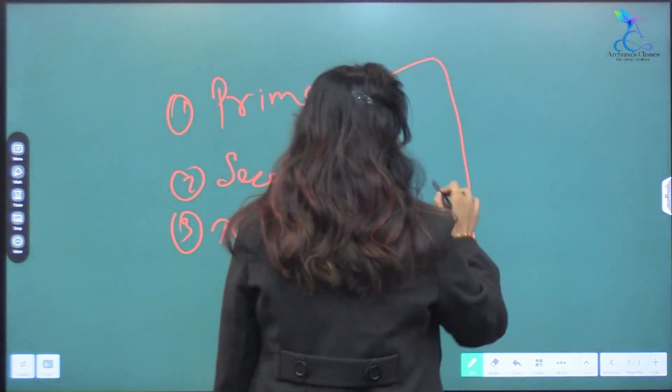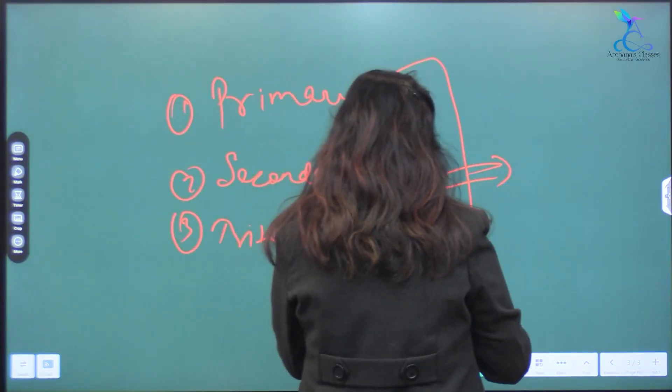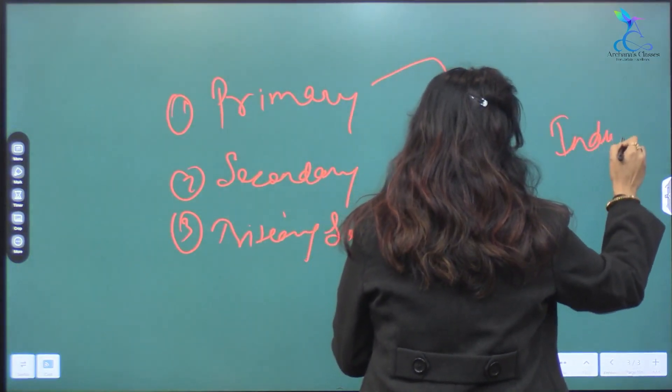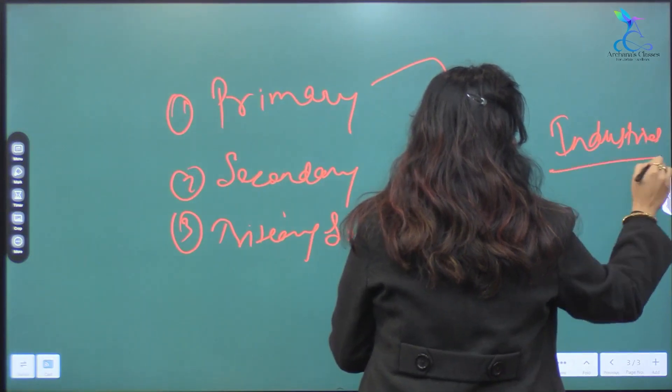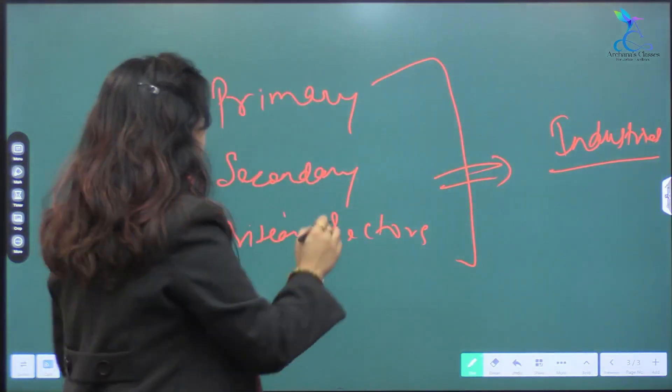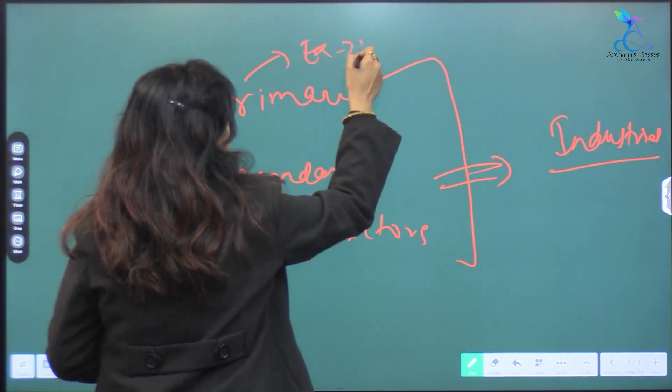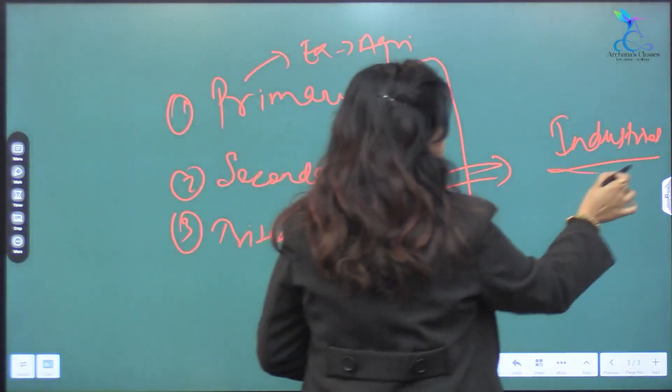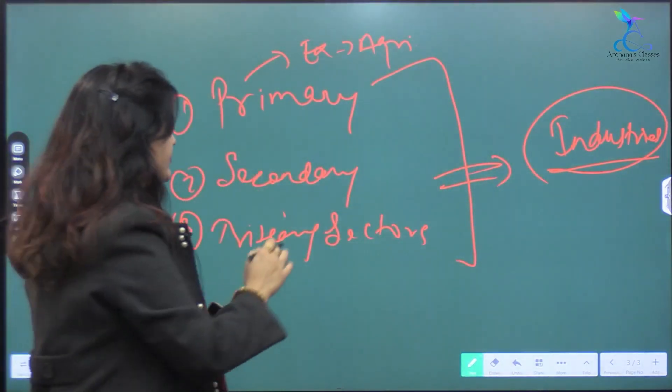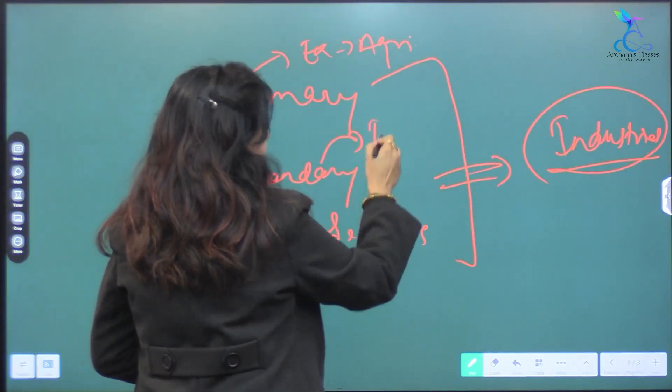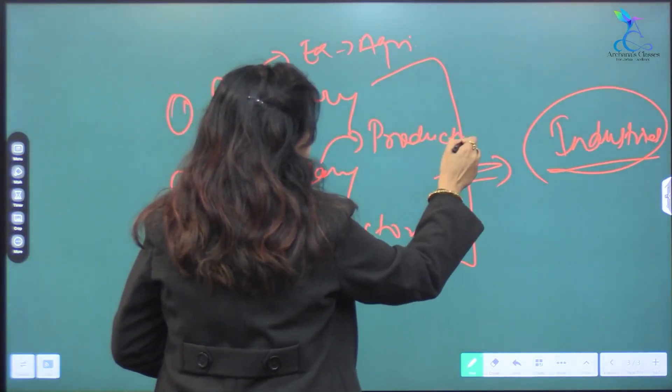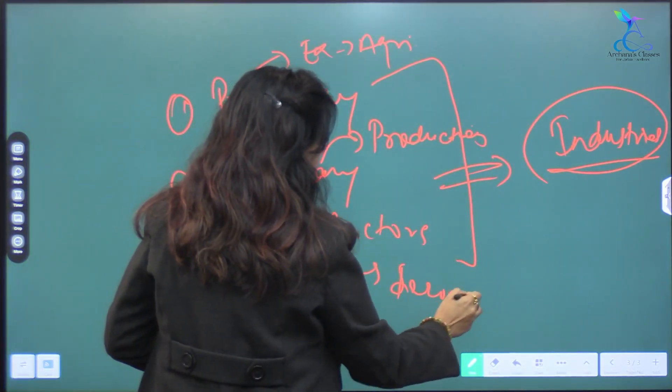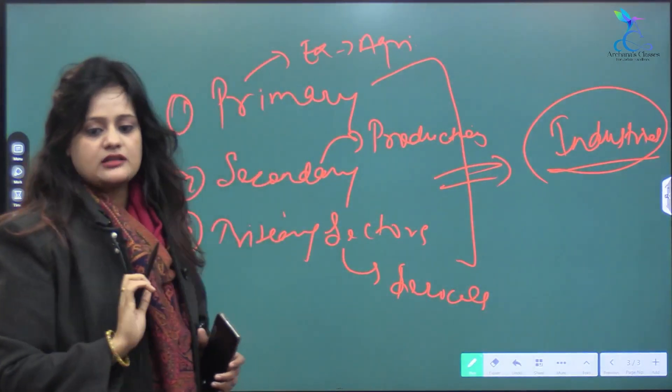These are the three sectors that we call Indian subcontinent industries. Primary sector will be agriculture. Secondary sector will be manufacturing. Tertiary sector is the same category sector which provides services to us in the tertiary sector.